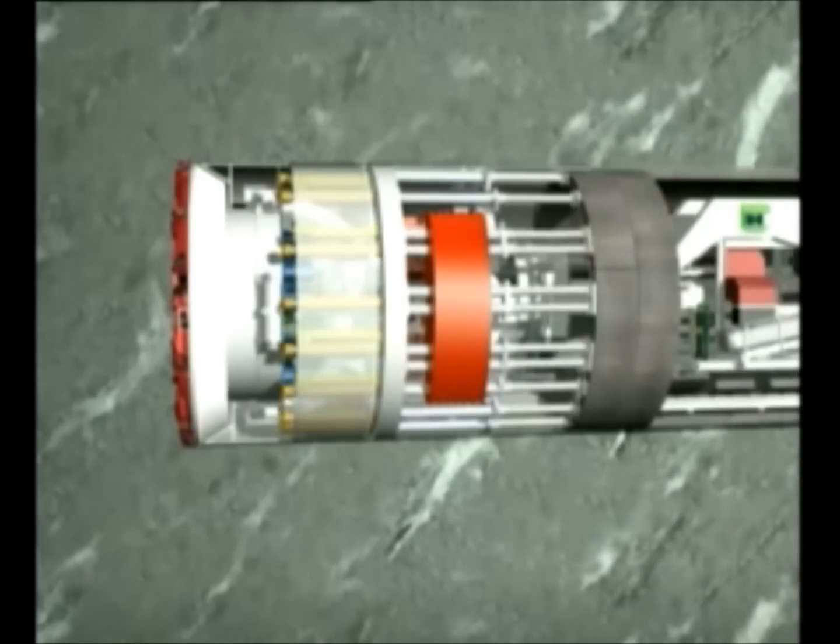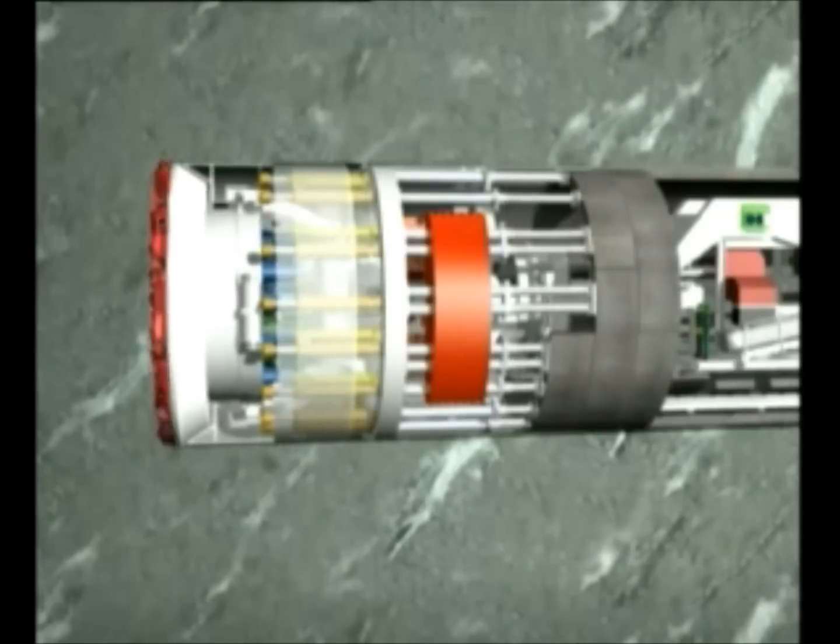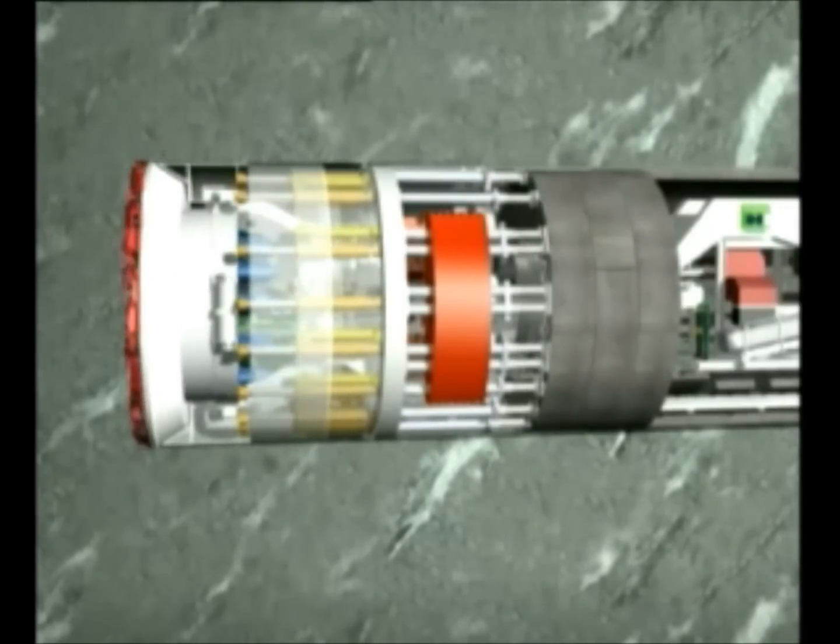The double shield TBM owes its name to a special constructional design. In the front part of the machine is a forward-moving front shield. It permits an extension of the cutter head. The rear part of the machine is not moved during the tunneling progress.